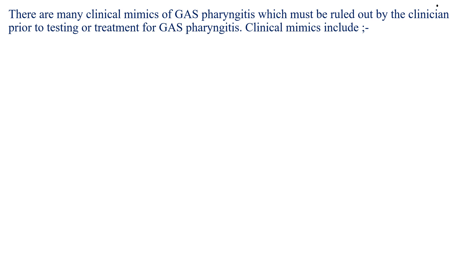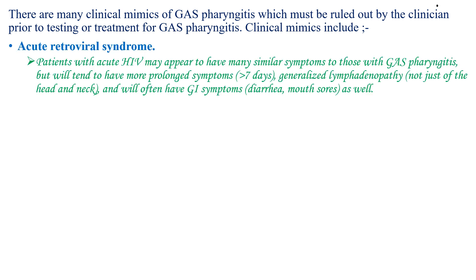There are many clinical mimics of group A streptococcal pharyngitis which must be ruled out by the clinician prior to testing or treatment. Clinical mimics include acute retroviral syndrome — patients with acute HIV may appear to have many similar symptoms, but will tend to have more prolonged symptoms, generalized lymphadenopathy, and will often have GI symptoms.